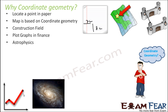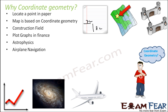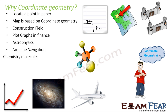In astrophysics, coordinate geometry is used to find the distance between two planets without physically going there. For navigation, airplane navigation uses it extensively — there is a controller room on the ground that tracks the positions of airplanes, all done using coordinate geometry. In chemistry, the whole study of molecules uses coordinate geometry as well.